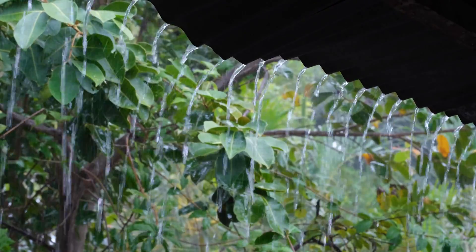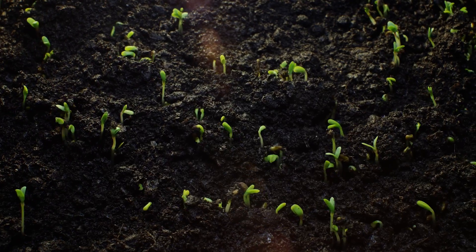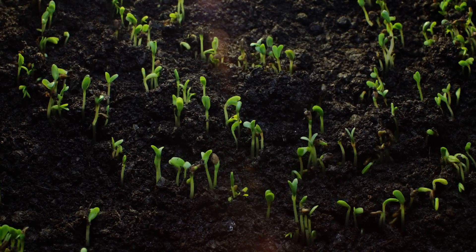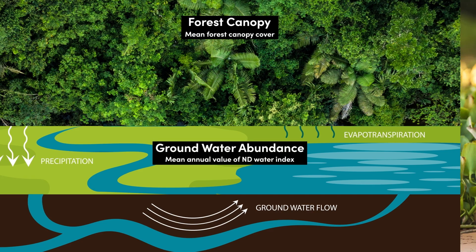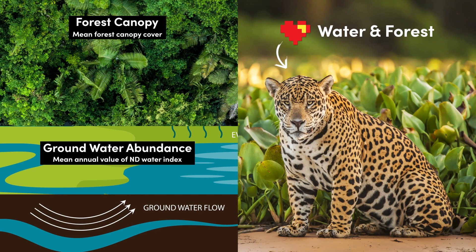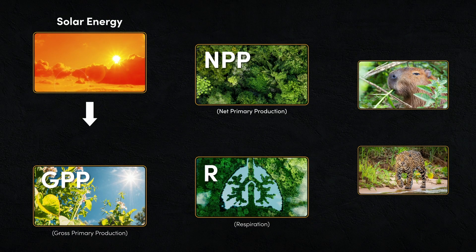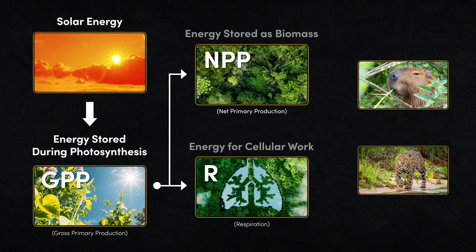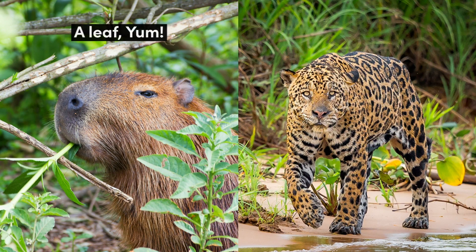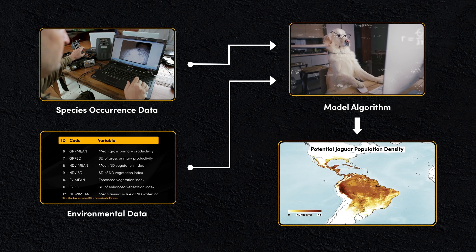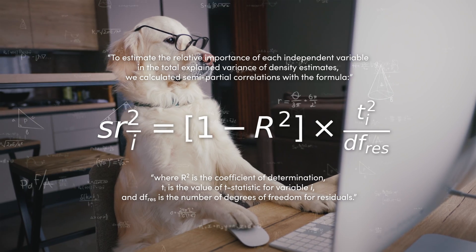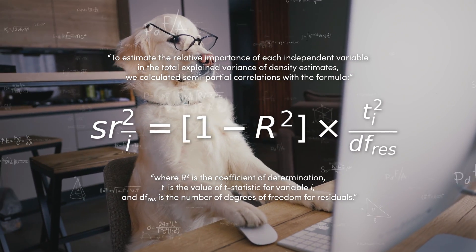Environmental factors included precipitation, which is usually related to ecological productivity in the tropics; the amount of forest canopy and groundwater, both of which jaguars are huge fans of; and both gross and net primary production, which relates to the productivity of an ecosystem — effectively, more food for the herbivores means more prey for the jaguar. All of this data was then used together to produce density models using complicated math that we'll gloss over in this video.